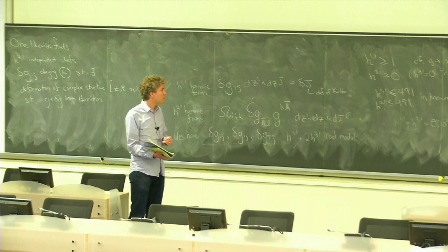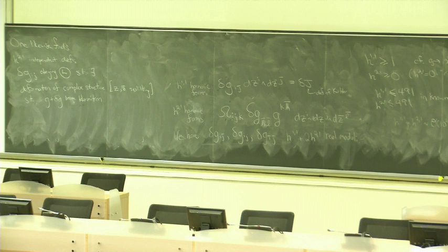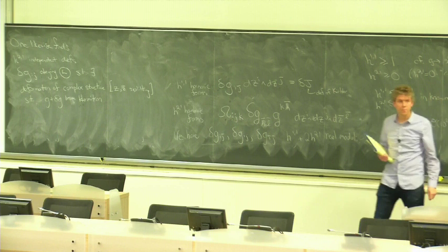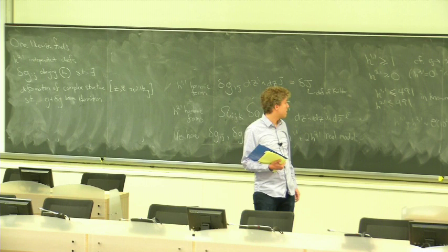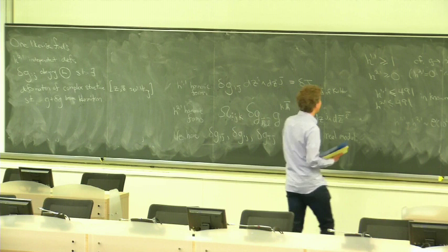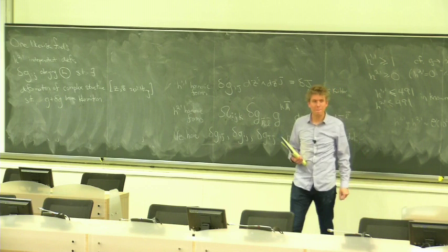The maximum of the sum — to the best of my knowledge — is 502, and no one has yet come up with good reasons for these bounds. The upper bounds: no. The lower bound H^{1,1} ≥ 1: yes, that one we understand. It would be worth pursuing why those upper bounds hold.